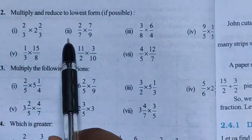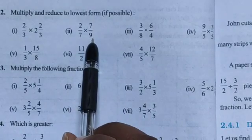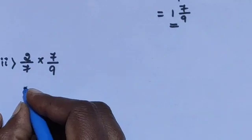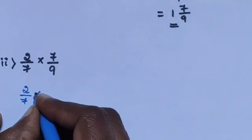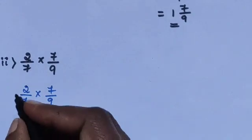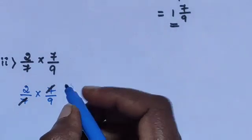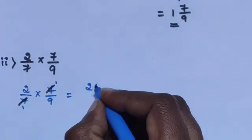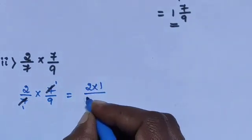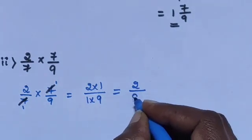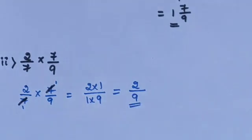Next, sub-question 2: 2/7 multiplied by 7/9. The 7s get cancelled, leaving 1 and 1. Then 2×1 divided by 1×9 equals 2/9. The answer is 2/9.